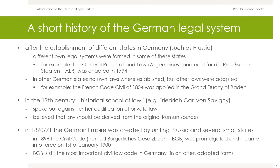At the beginning of the 19th century, another impact formed the German legal system. Representatives of the historical school of law, such as Friedrich Karl von Savigny, spoke out against further codification of private law. They believed that law should be derived from the original Roman sources.